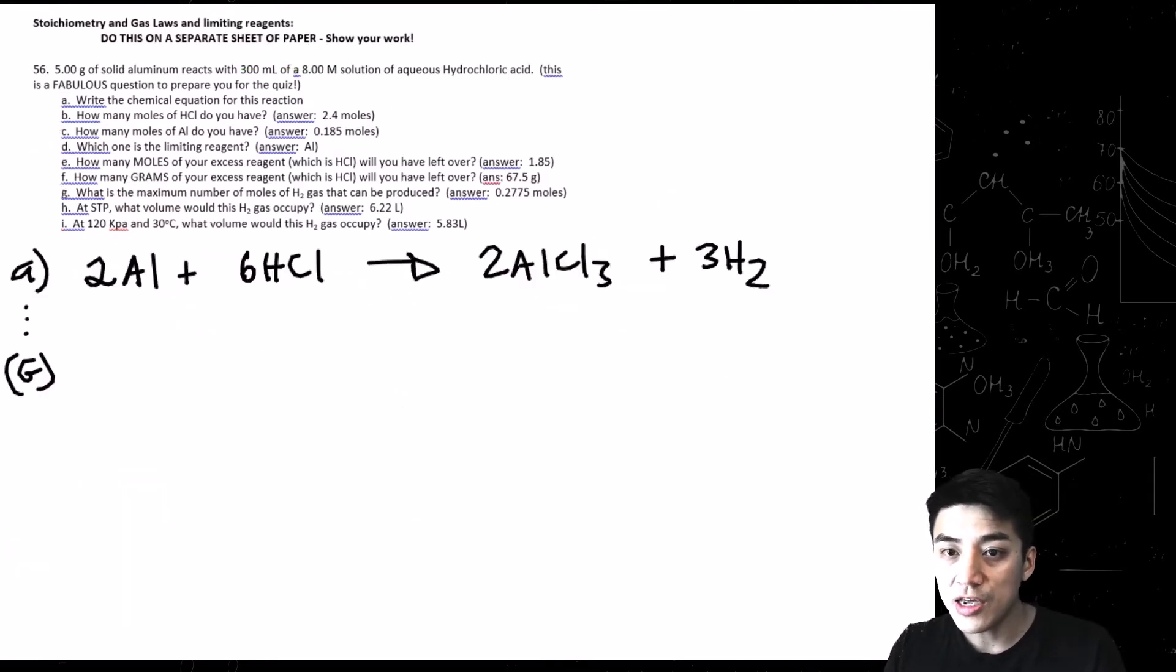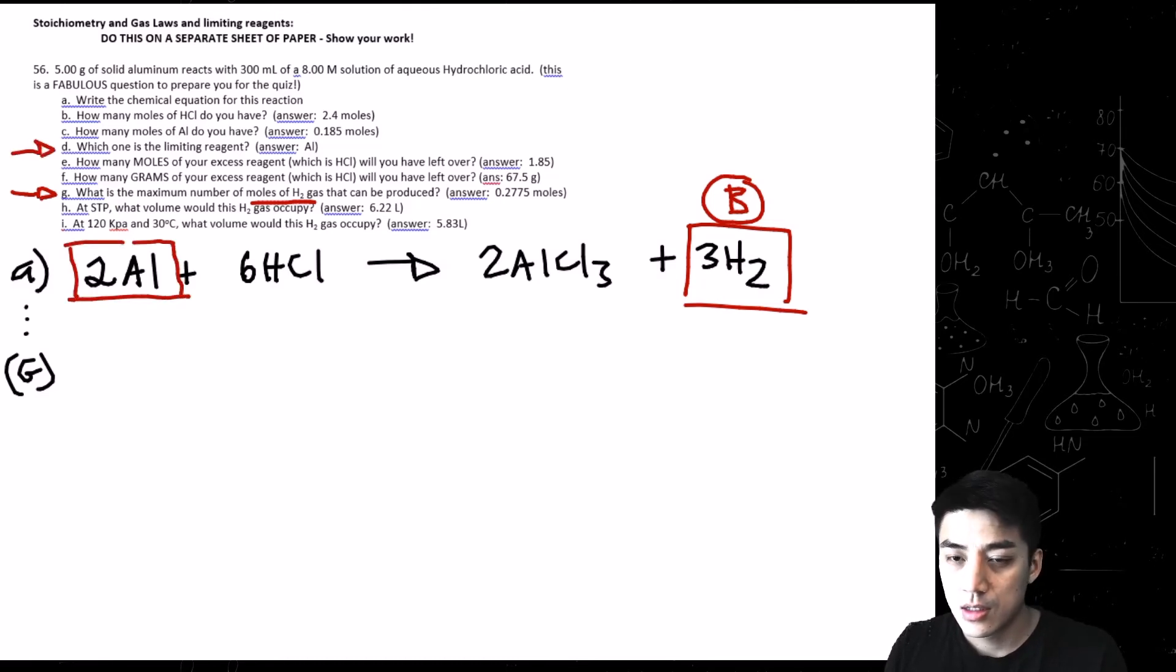The few remaining problems, G, H, and I, we're going to do on this clip here. So all we really need is the balanced equation from letter A, and this will help us do the rest of the problem. Letter G, what is the max number of moles H2 gas that can be produced? We're going to go ahead and box Al, because that was a limiting reagent that we found earlier. So we're going to call Al compound A, and then H2 is compound B.